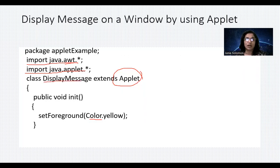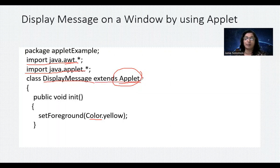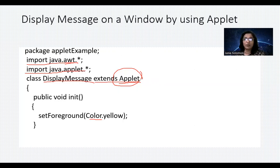Your class can be named DisplayMessage or any name you choose, but you must extend Applet — it is compulsory for an applet program. The lifecycle of an applet has four stages: init, start, stop, and destroy.